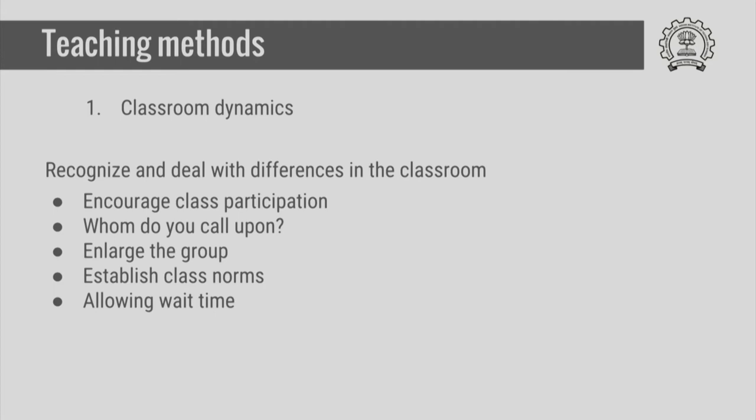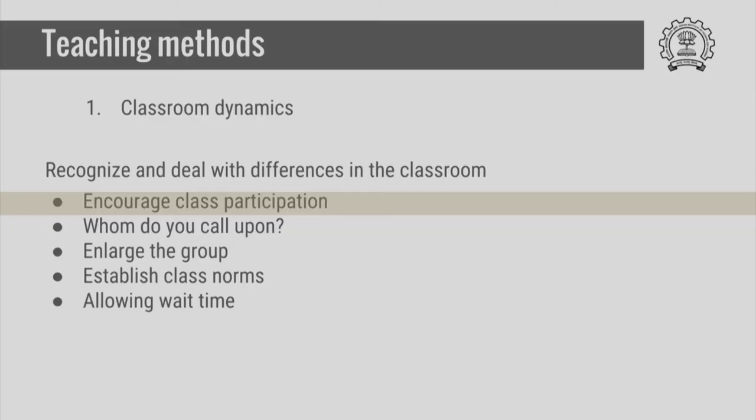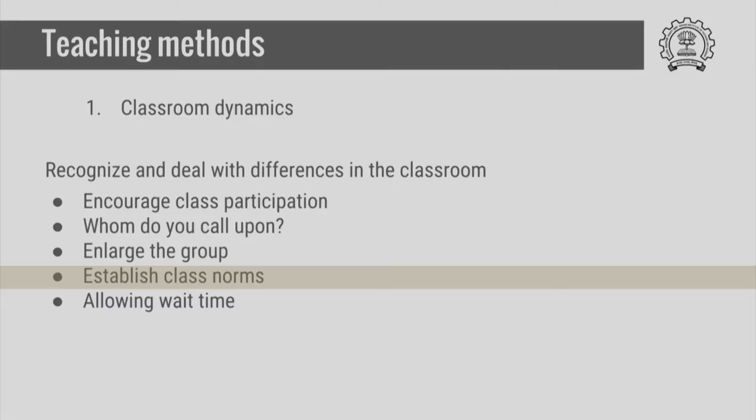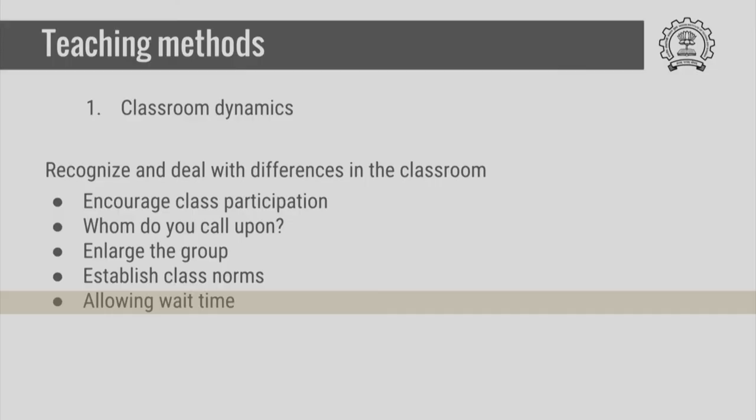We are going to focus a little bit on teaching methods and classroom dynamics. In the classroom, one should encourage participation from everybody. If some people are only called upon all the time, others feel excluded. People who have traditionally been shy, whose language abilities may not be very high, or who are not very confident, should be called upon to participate — not just the person who raises their hand. Establishing class norms so that everybody is allowed to speak, and allowing wait time, remembering that some people need time to gather confidence before responding, are all very important to ensure equitable participation.